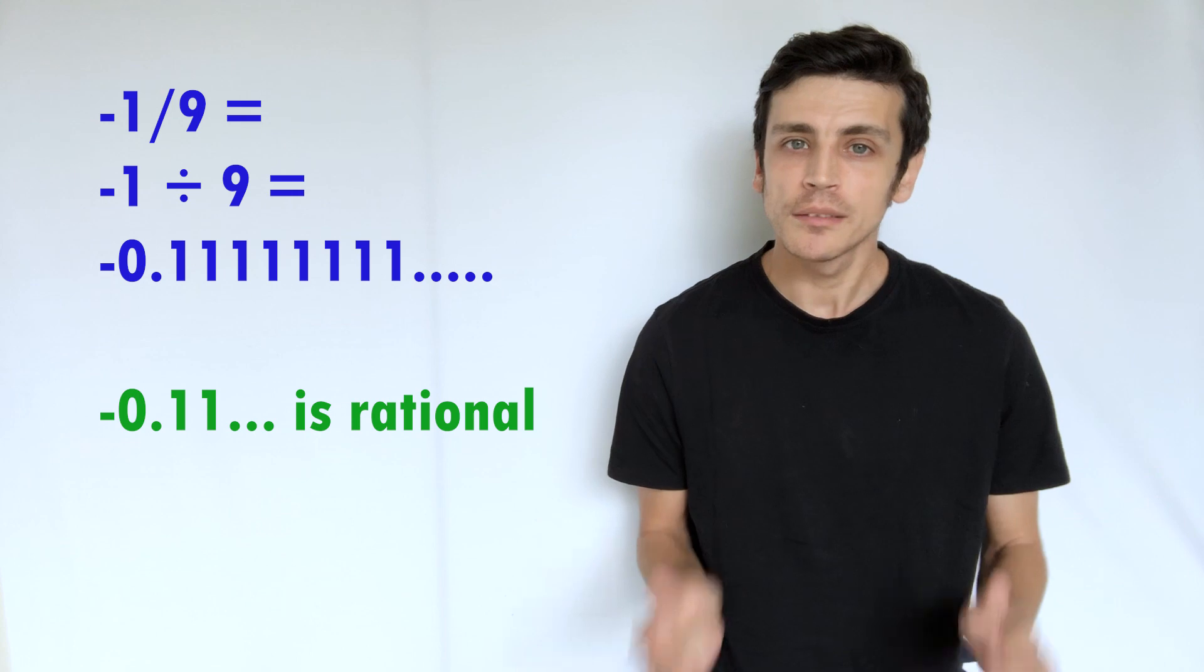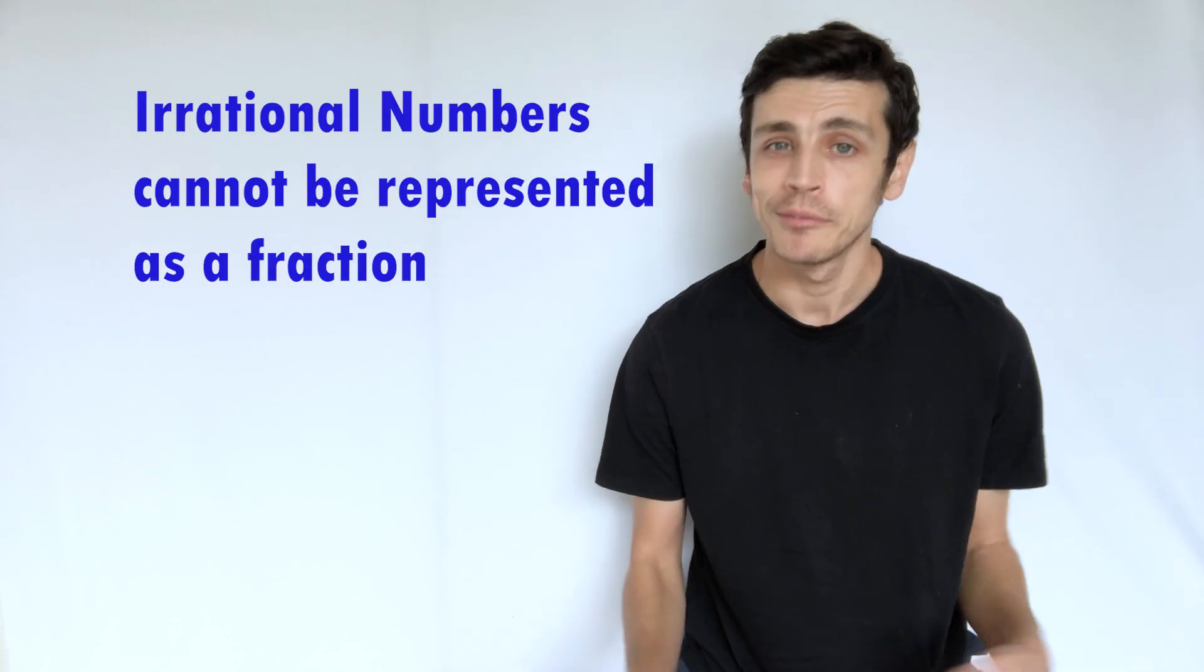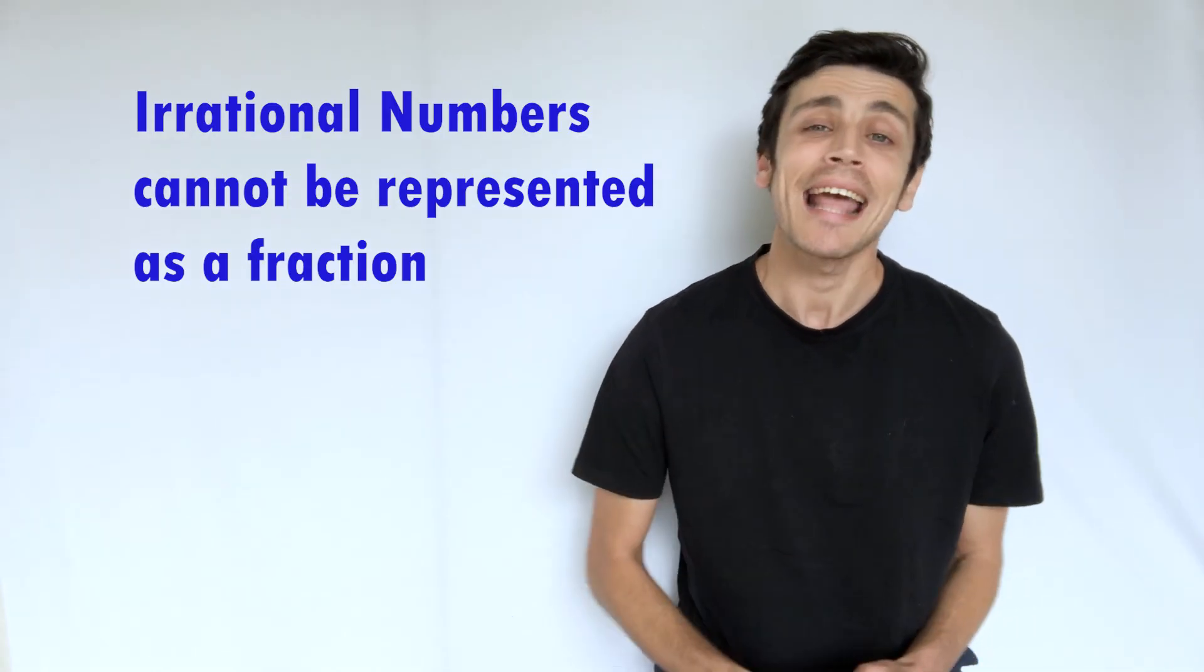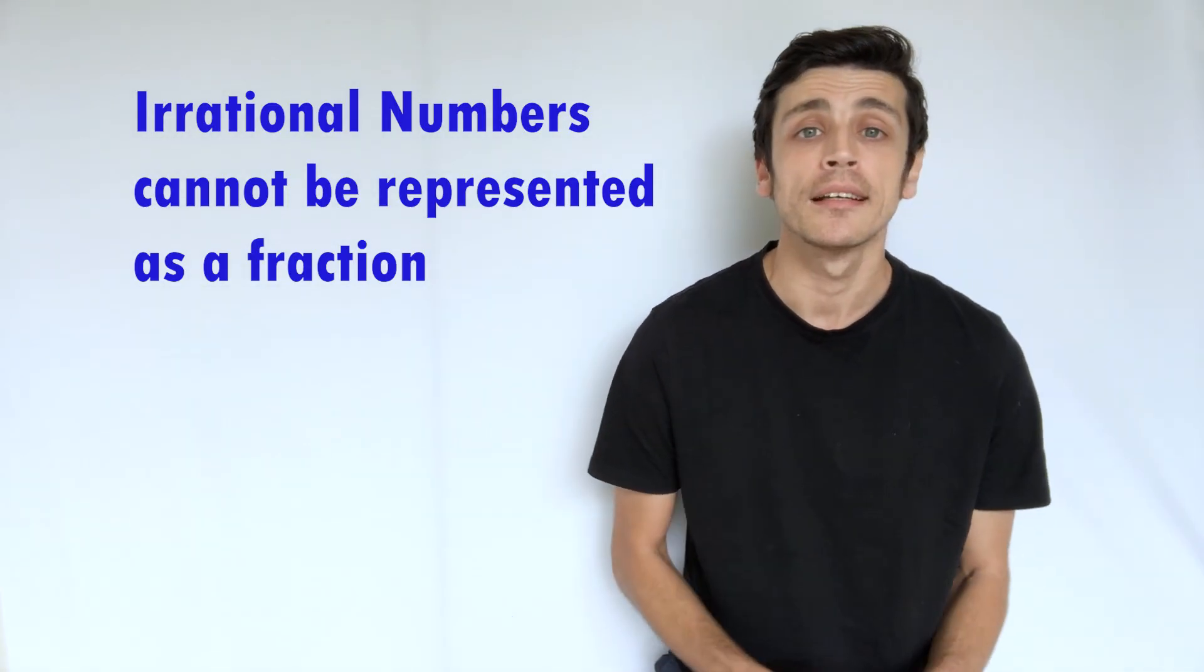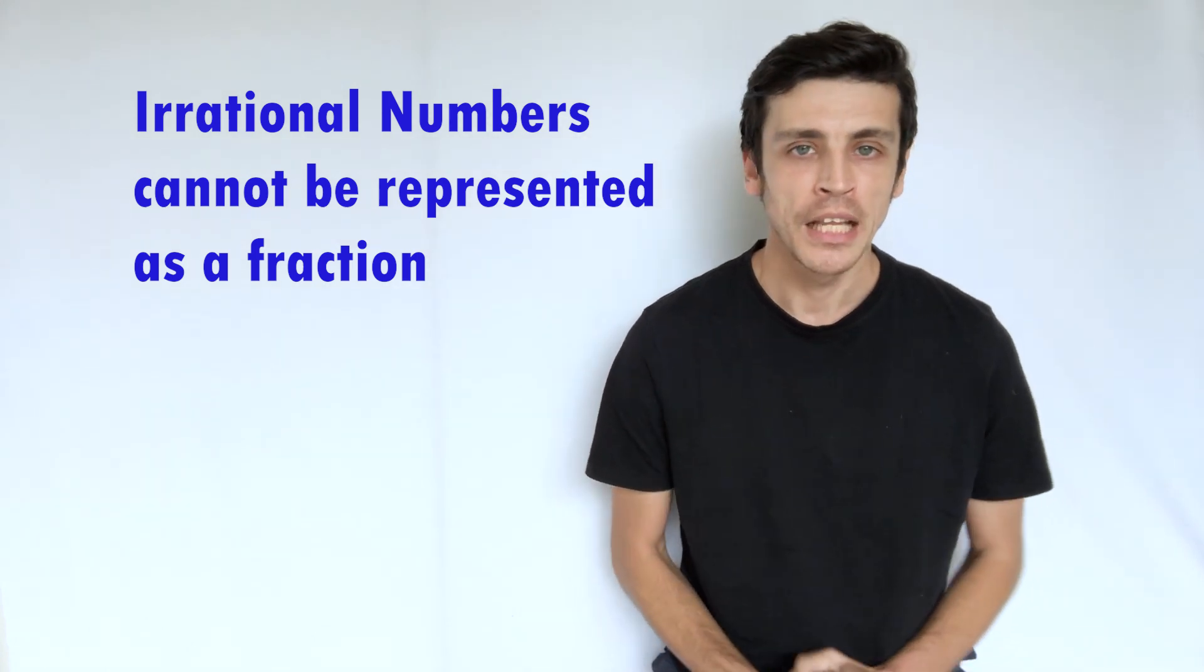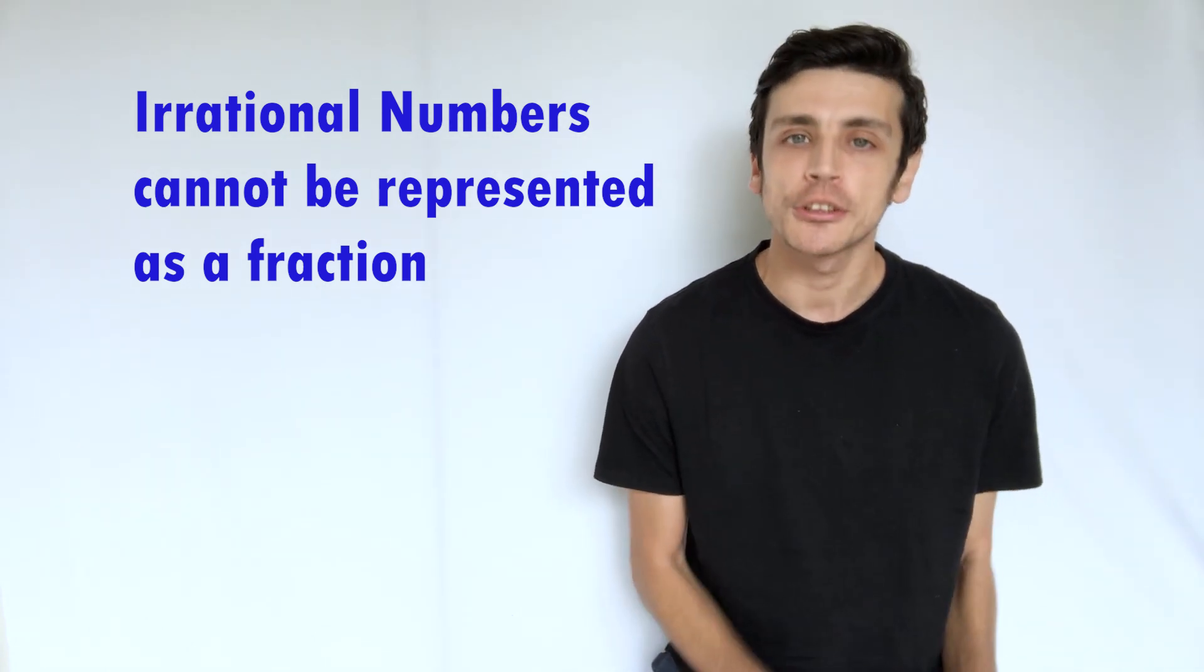So that's briefly what rational numbers are. Irrational numbers are the opposite, which means that of course they can't be represented as a fraction, and you will get some strange numbers.